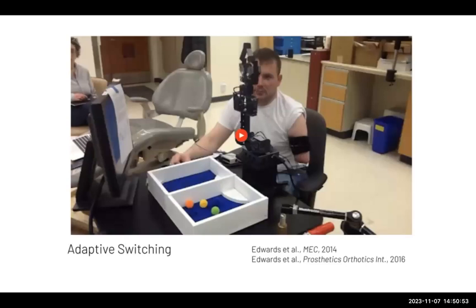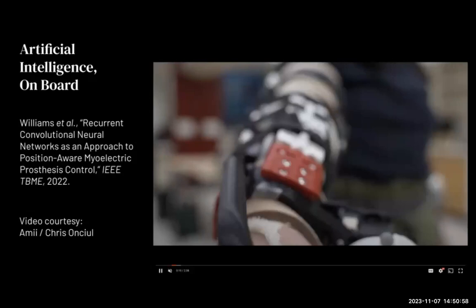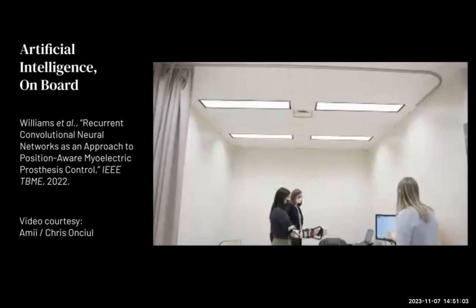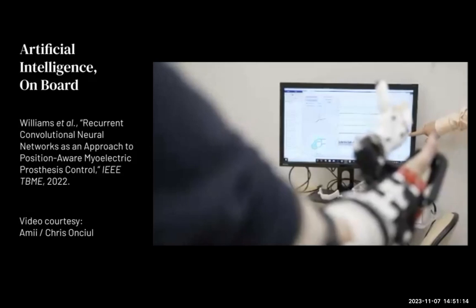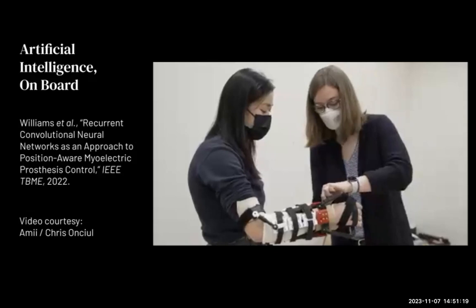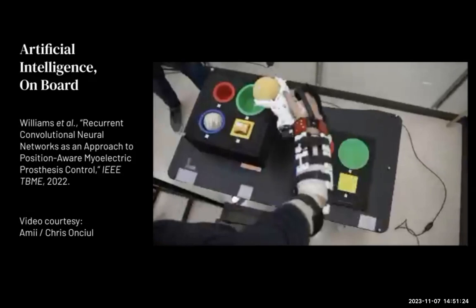Since that time we've also looked at more context-sensitive devices. This is work by Heather Williams, a PhD student supervised by Dr. Jacqueline Hebert and me. Heather is looking at a way to solve what we call the limb position effect — when someone uses a prosthesis based on muscle signals and they reach up, their muscles act very differently than when the arm is at waist level. The sensors shift, and when someone reaches to grab something above shoulder level, the system becomes unable to effectively interpret the signals coming from their body.